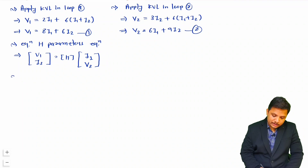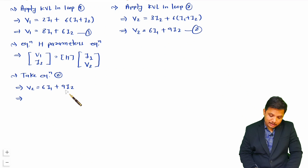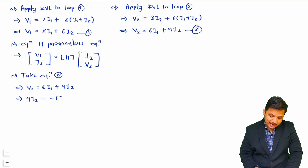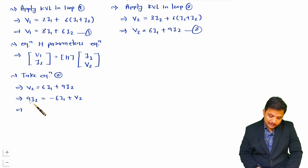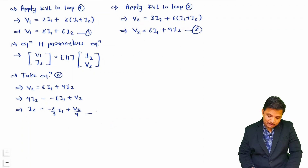Let us take equation 2 first. We want i2 in terms of i1 and V2. Rearranging: 9·i2 = V2 − 6·i1. Dividing by 9: i2 = −(6/9)·i1 + V2/9 = −(2/3)·i1 + (1/9)·V2. Let us call this equation 3. This is the form required for the second h-parameter equation.